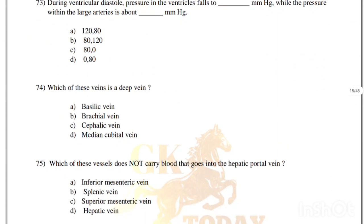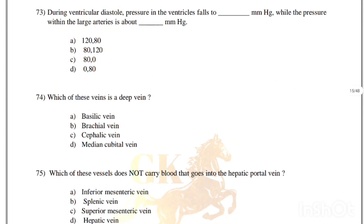During ventricular diastole, pressure in the ventricles falls to 0 mmHg, while the pressure within the large arteries is about 80 mmHg. Correct answer is option D, 0 and 80.